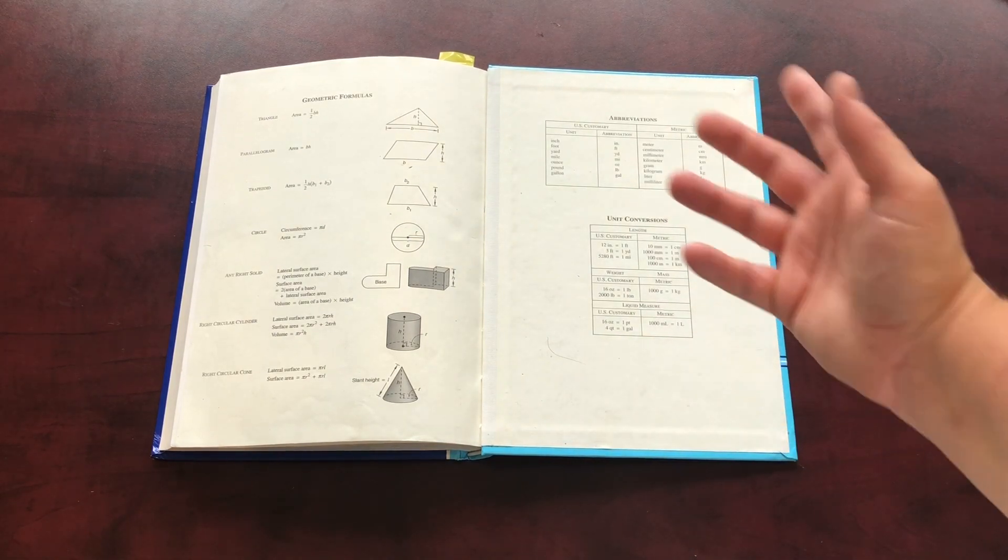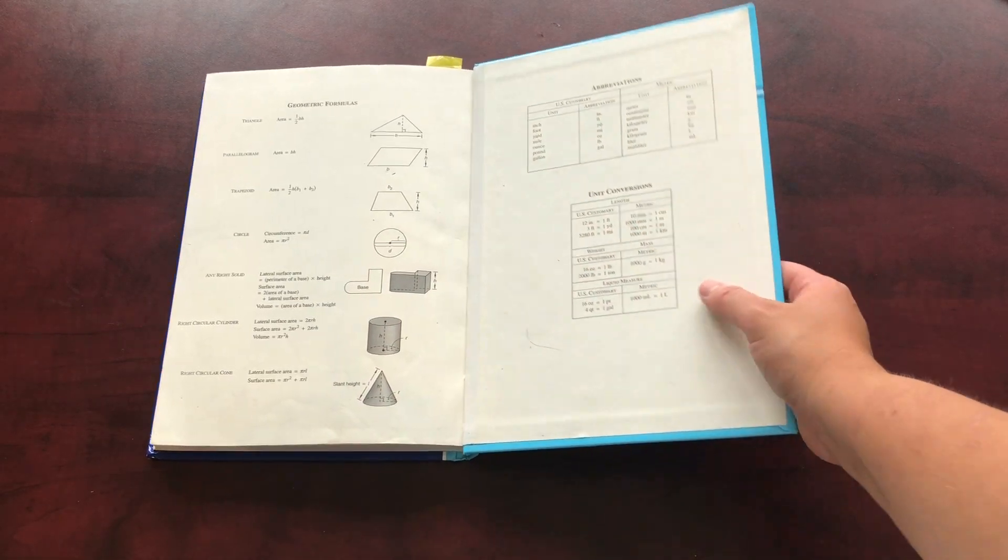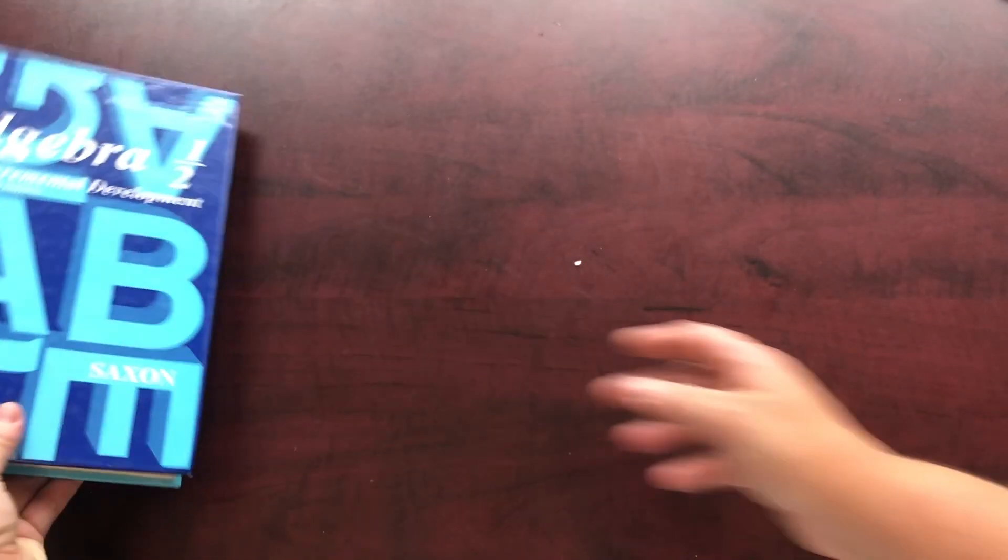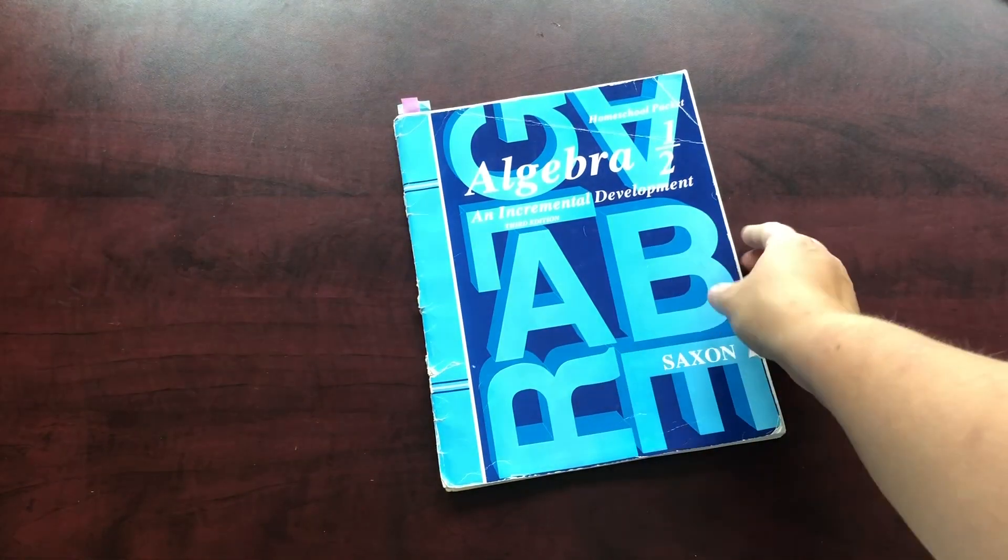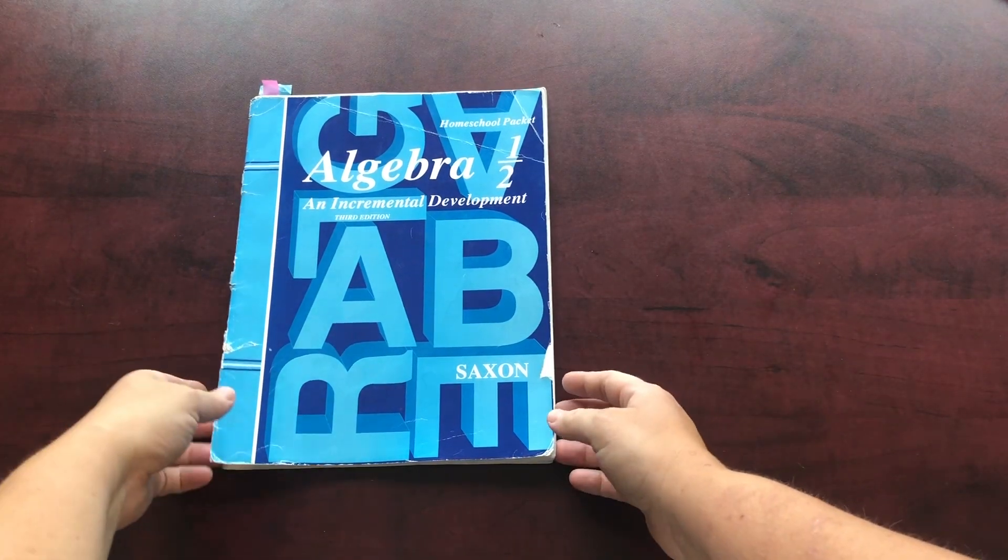So your student or child is going to be using like a notebook to do these questions. And they'll be reading this textbook. Then the next part that comes with it is this book here, which you can tell ours has been well used. This is a soft cover.